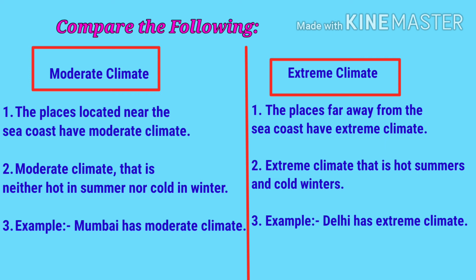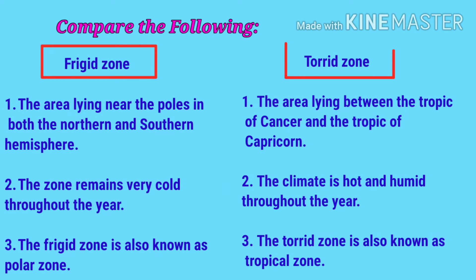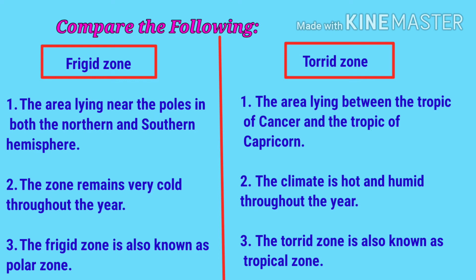Compare the frigid zone and the torrid zone. The frigid zone is the area lying near the poles in both the northern and southern hemispheres — it remains very cold throughout the year and is also known as the polar zone. The torrid zone is the area lying between the Tropic of Cancer and the Tropic of Capricorn — the climate is hot and humid throughout the year and it is also known as the tropical zone.